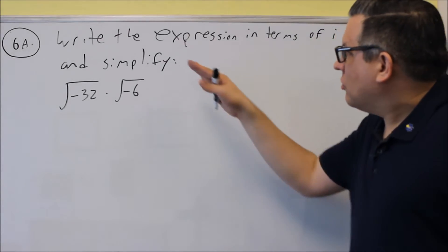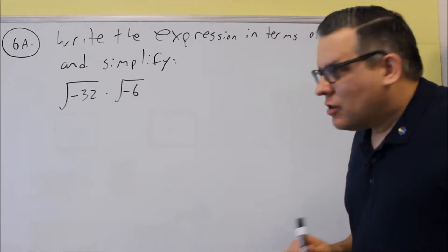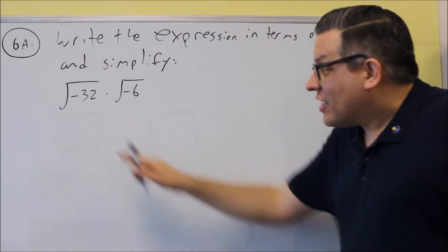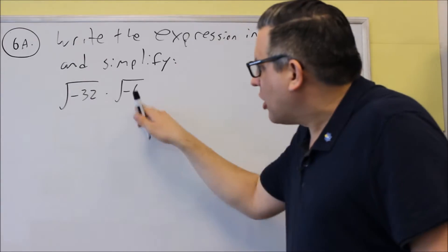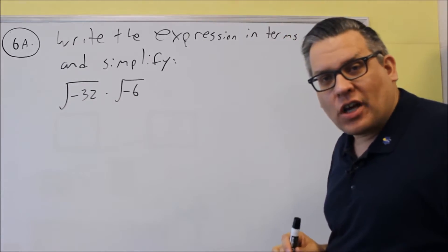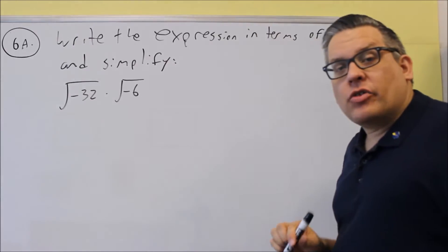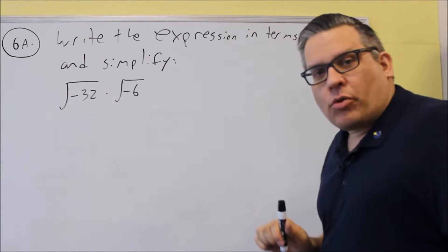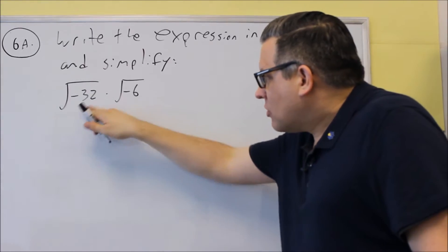For 6a, it's asking us to write the expression in terms of i and simplify. So for each of these, because we have negatives underneath the square root, each of these are going to turn into i. One thing you don't want to do is start by multiplying both those together and do negative 32 times negative 6 — that's not what the question is asking, and you would actually get the wrong answer. Each of these we want to break down and turn them into expressions with i's.